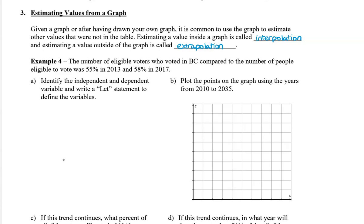Let's take a look at an example. The number of eligible voters who voted in BC compared to the number of people eligible to vote was 55% in 2013 and then 58% in 2017. Let's identify the independent and dependent variables, and we're going to write a let statement to define these variables.